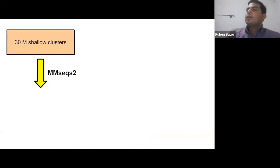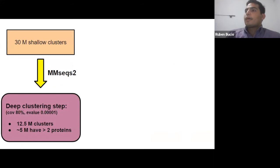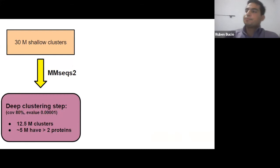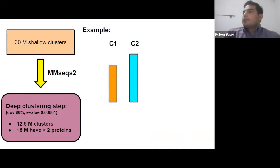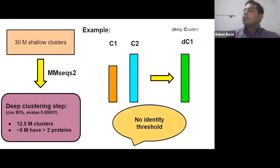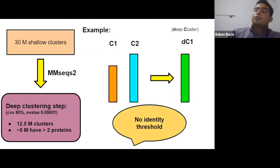The second step of clustering, also called deep clustering, also used the MMseqs2 tool. We were able to cluster those 30 million shallow clusters into 12 million deep clusters, five million of which have two or more proteins. Two similar clusters would be merged into the same deep cluster. Importantly, we did not set any identity threshold, since viral and phage proteins mutate very fast — two proteins could have the same function but very different composition.